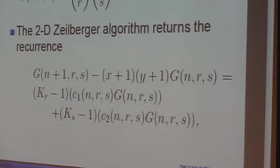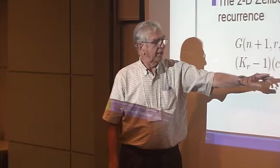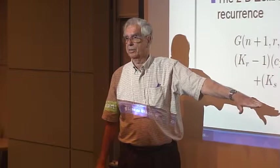Anyway, the forward shift operator minus 1 acting on some function of n, r, and s, times g—which is that g—plus the same thing in s. So it returns a recurrence that looks like that.